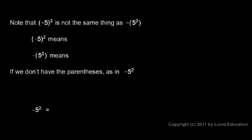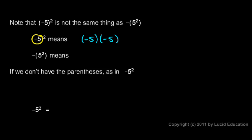Now, there's a very important point here in the notes. Note that (-5)² is not the same thing as -5². In the first case, the negative sign is in the parentheses, and it is the negative 5 — that thing in parentheses — that's getting squared. In the second case, we have 5 squared, and then that thing has a negative sign on it. Negative 5 squared means negative 5 times negative 5, which equals 25, because we have two negative signs — an even number — so we get a positive result.